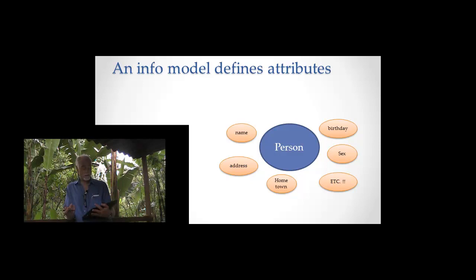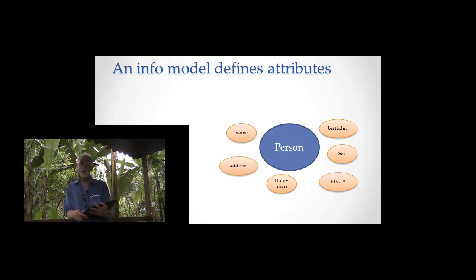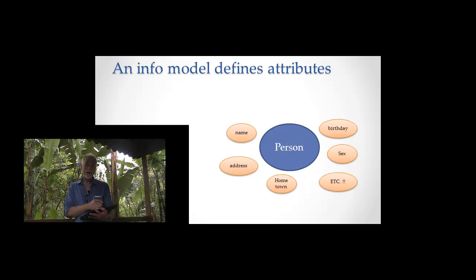We've talked about this before — the name, the address, hometown, etc. We can begin to create a more and more sophisticated model that goes deeper and deeper into these ideas. So far we've really talked about these things at a very superficial level. Now, as we go deeper, we're going to talk about them at a much more specific level.